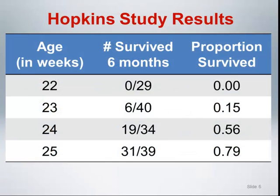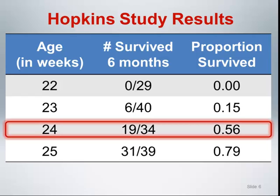Let's return to discussing how to quantify sampling variability — that is, the uncertainty that results from random sampling. For the remainder of the presentation, let's focus in particular on infants born at 24 weeks gestation. 19 out of 34 infants survive to 6 months, representing a survival proportion of 0.56 or a 56% survival rate.